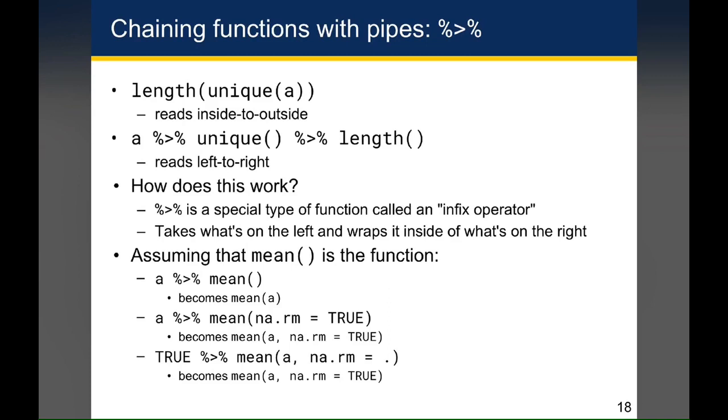So let's say that the function we're talking about is mean. If I were to write A pipe mean, what that would get transformed into is mean parenthesis A and parenthesis. So basically what I'd be saying is start with A, then calculate the mean.